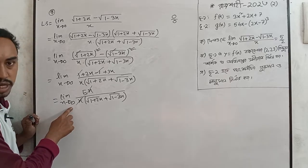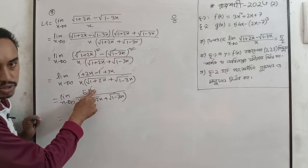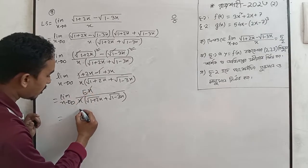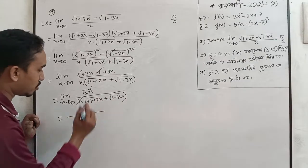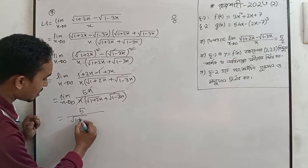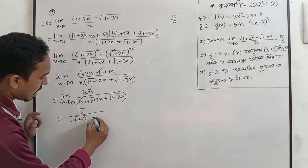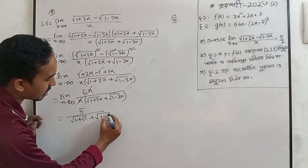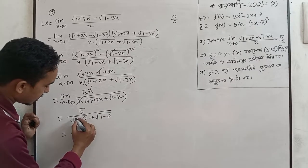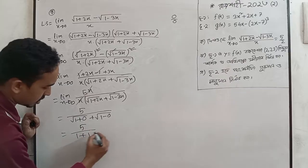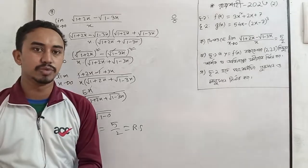The top simplifies to 5x. Limit x tends to 0 of 5x divided by x times root over 1 plus 2x plus root over 1 minus 3x. We cancel out x, then substitute x equals 0: root over 1 plus 0 plus root over 1 minus 0 equals 2. So we get 5 divided by 2, which is 5 by 2.